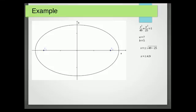So in our diagram we'd have F1 has the coordinates minus 4.9, 0 and F2 has the coordinates 4.9, 0.